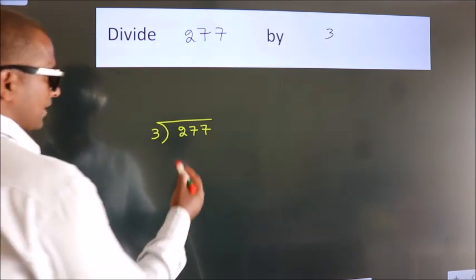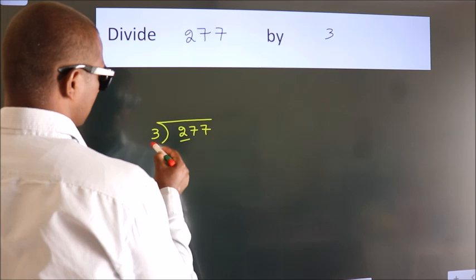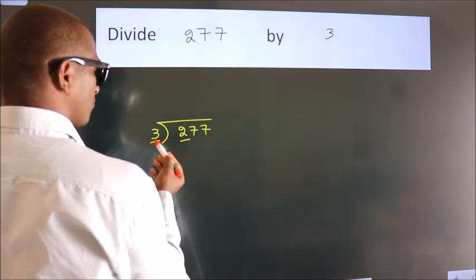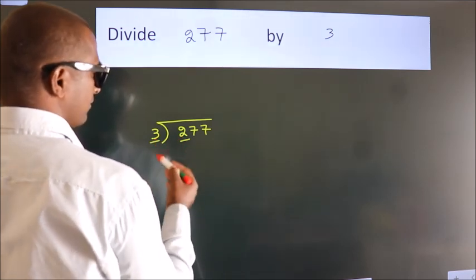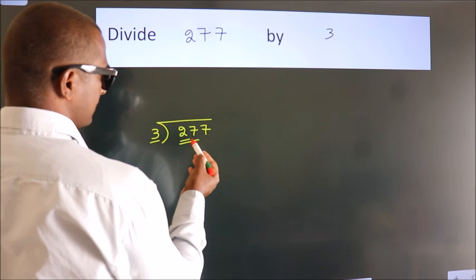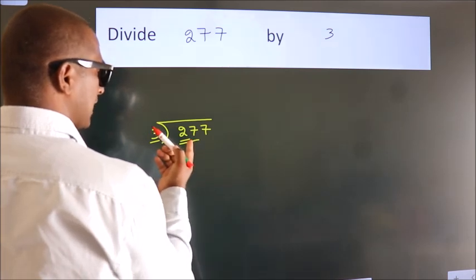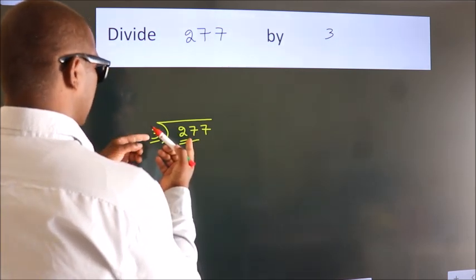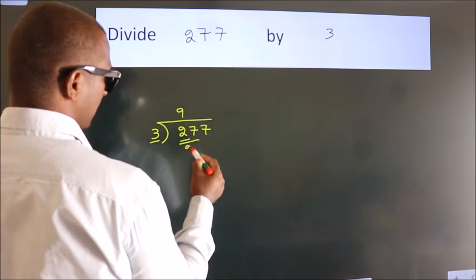Next. Here we have 2, here 3. 2 is smaller than 3, so we should take 2 numbers as 27. When do we get 27? In the 3 table, 3 nines are 27.